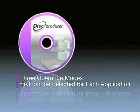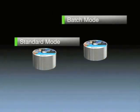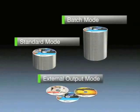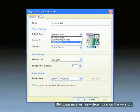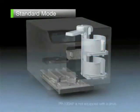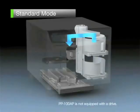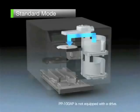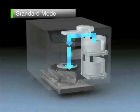There are three operation modes that can be selected for each application: standard mode, batch mode, and external output mode. For the output of 50 discs or less, set standard mode and then place the discs in stacker one. Discs will be transported and data writing will be carried out in the two drives. After label printing is completed, the discs will be output to stacker two.